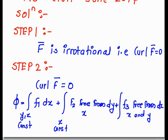Step 2: We use curl of F bar equals 0. To find phi, we integrate f1 with respect to x considering y and z as constants; we integrate the terms in f2 that are free from x with respect to y, considering z as constant; and we integrate terms in f3 that are free from x and y with respect to z.